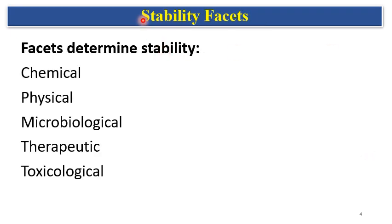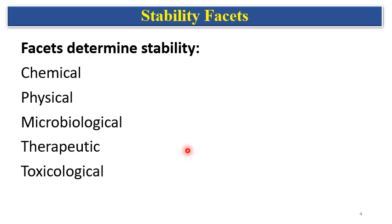Now we will see what are the stability facets. Stability is required to be maintained in terms of chemical stability, physical stability, microbiological stability, therapeutic stability, and biological stability — that is toxicological stability and biopharmaceutical stability. All these types of facets or requirements must be met before we can say that the product is stable throughout the expiry period or shelf life.